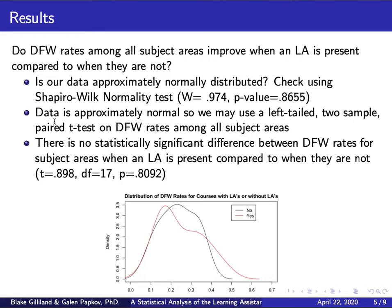Before applying any statistical tests to our first question, we need to check the shape of our data. Ideally we'd use a parametric test like a t-test, but we can't assume normality without checking. We use the Shapiro-Wilk normality test, feeding in the differences between DFW rates — the average DFW rate for courses without an LA minus the average for courses with an LA.